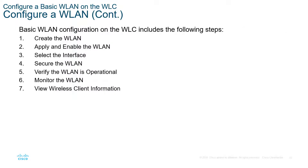Basic wireless configuration has seven main steps: first, create the wireless LAN; next, enable the wireless LAN; select the appropriate interface; secure it; verify operational integrity; monitor; and then view wireless clients.